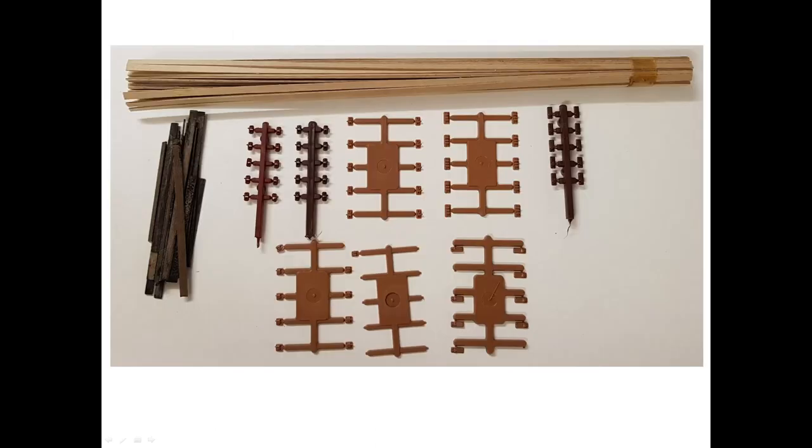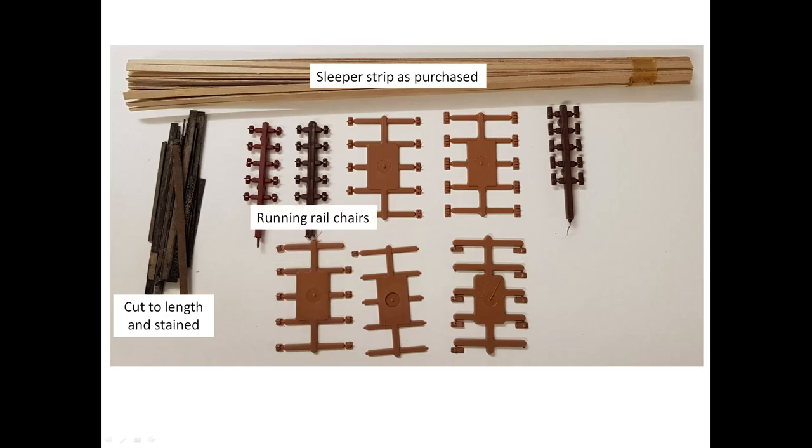Here's some of my rivet and ply track. Those who have the stamina apply cosmetic half chairs. The remainder of my track and all of my point work is constructed with ply sleepers and functional chairs. It's easier to stain the sleeper strip after cutting it to length.